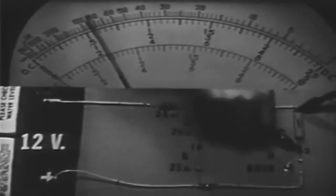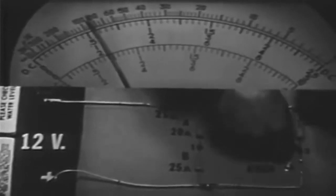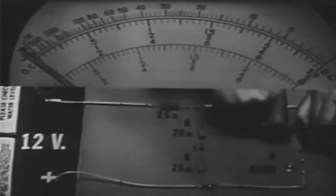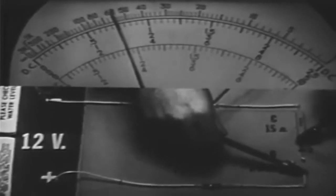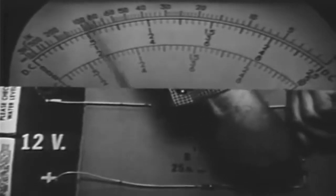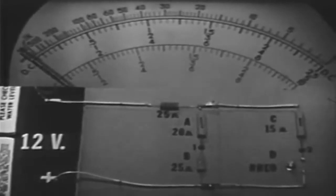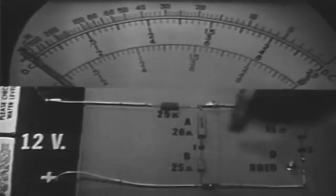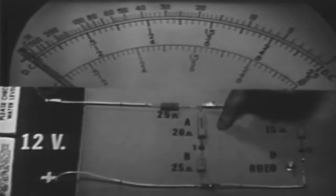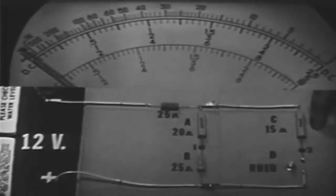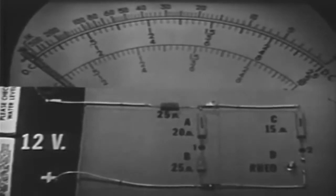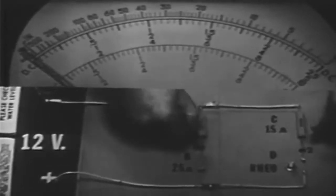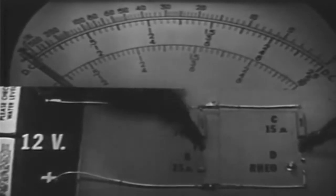Here we have 2.2 volts, and here we have 3 volts, so Ohm's law is still proving correct. Since we have 2.2 volts across resistor A and 2.2 volts across resistor C, points 1 and 2 must be at the same potential. Let's verify that with the voltmeter.